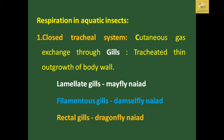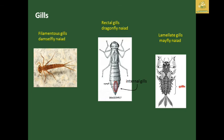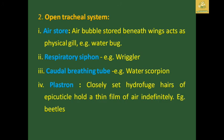For respiration in aquatic insects, there is a closed tracheal system where cutaneous gas exchange is mainly done by gills — tracheal thin outgrowths of the body wall. Laminated gills are present in mayfly naiads, filamental gills in damselfly naiads, and rectal gills in dragonfly naiads. The second type is the open tracheal system, which uses air stores, a respiratory siphon or caudal breathing tube, and plastron.